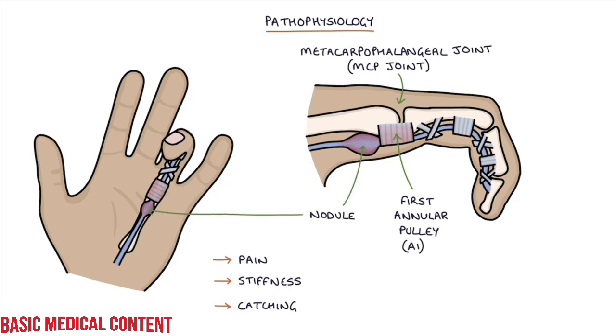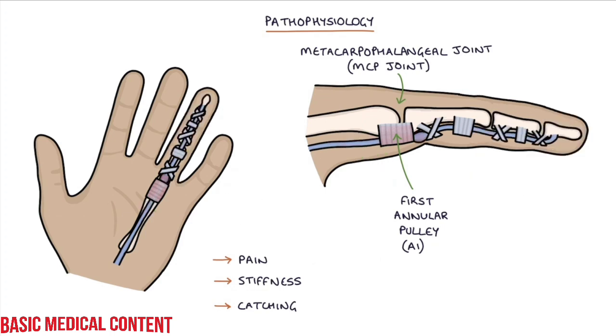When the finger is flexed, the nodule is outside the A1 pulley. As the finger is extended from a flexed position, the tendon nodule can get stuck at the entrance to the A1 pulley. This causes the finger to lock or get stuck in the bent position. It may suddenly release with a painful pop or click as the nodule goes through the pulley.